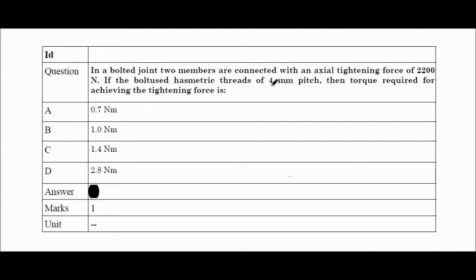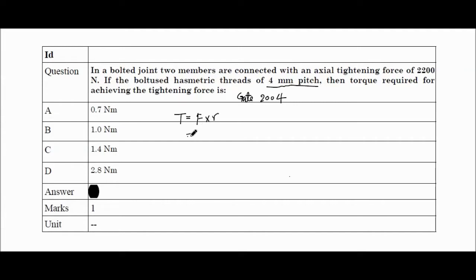Starting with this question: In a bolted joint, two members are connected with an axial tightening force of 2200N. If the bolt used has metric threads of 4mm pitch, then the torque required for achieving the tightening force is — this is a GATE 2004 question. If you need torque, the formula will be force into radius. The force is given as 2200N, multiplied by the radius.